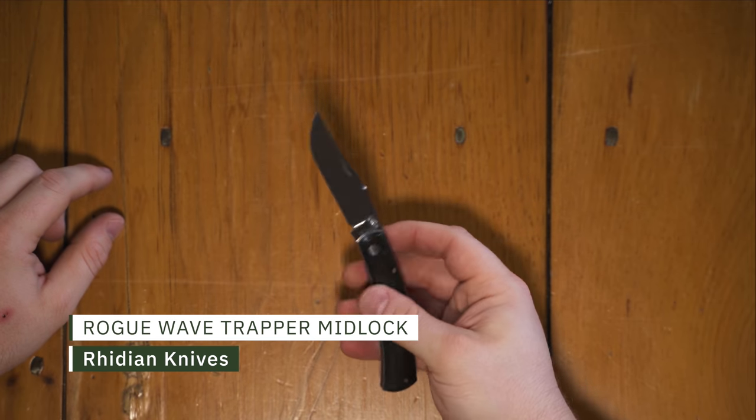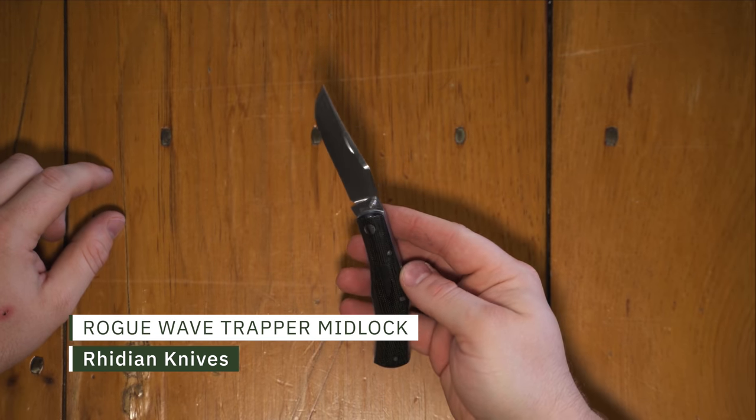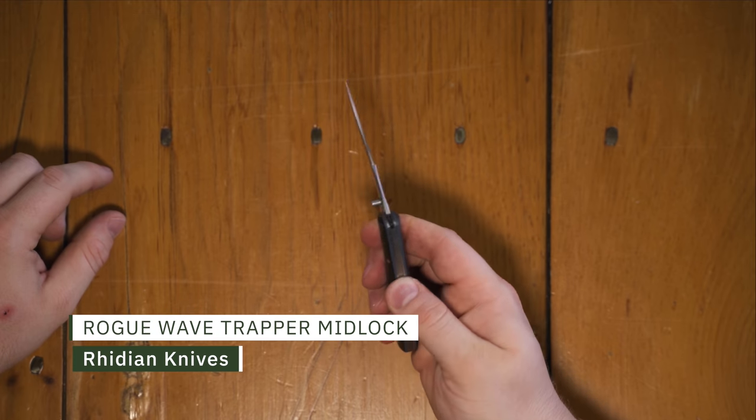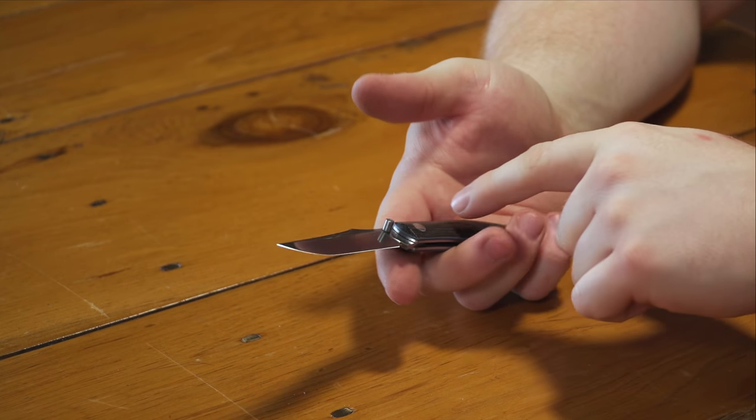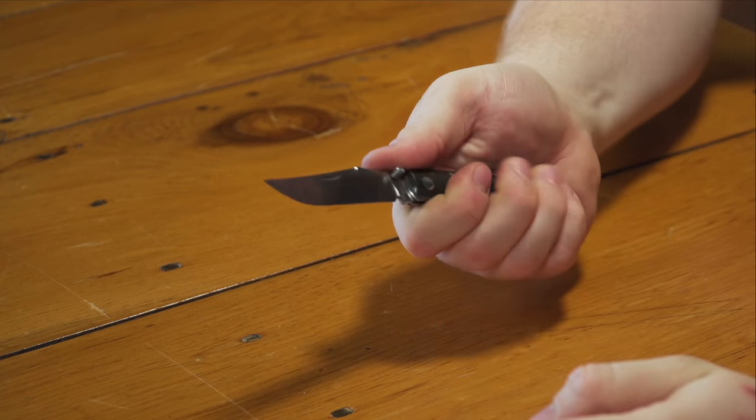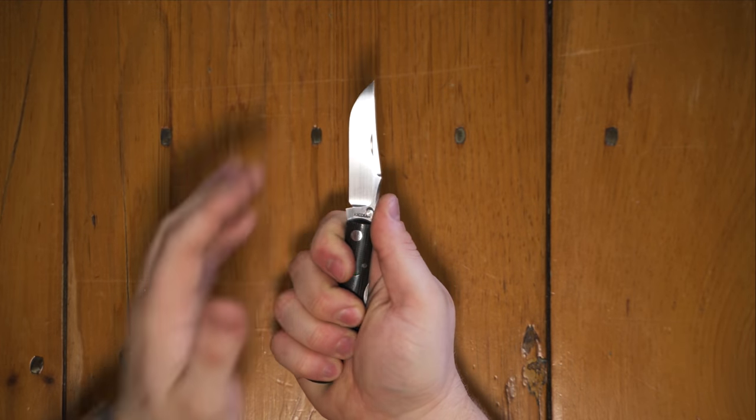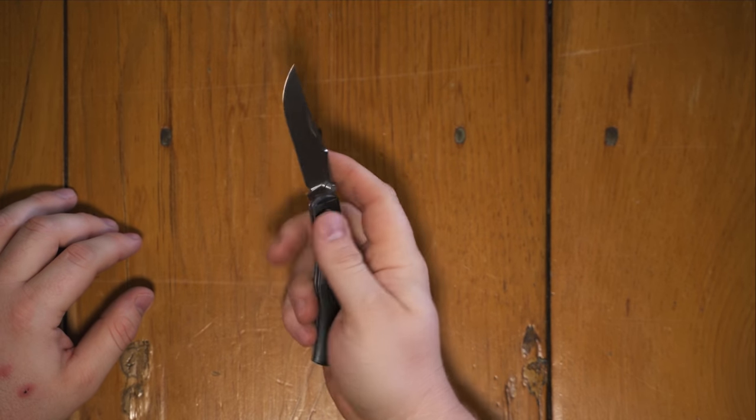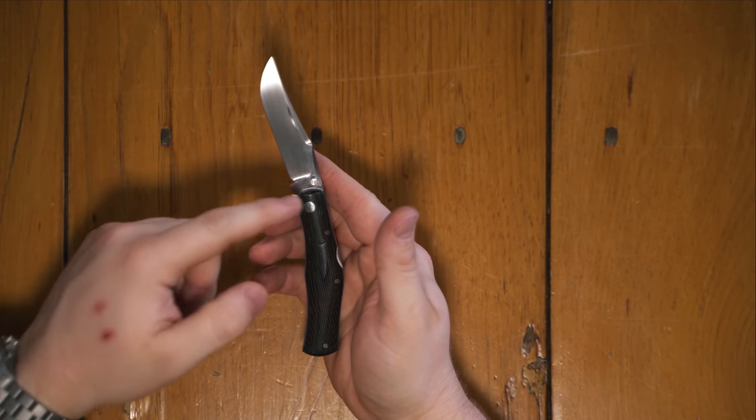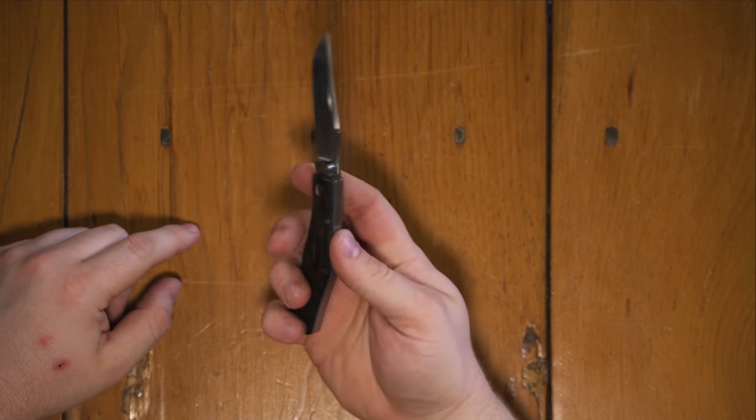This is the Ridian Rogue Wave Trapper Midlock. So what that means, Rogue Wave is the kind of almost Coke bottle, but bent style with kind of a forward angle blade. So if you're holding it, it's kind of at a forward slope out of your hand. Love the shape of this knife. Trapper is the pattern, I guess the blade style, and then you have a midlock.